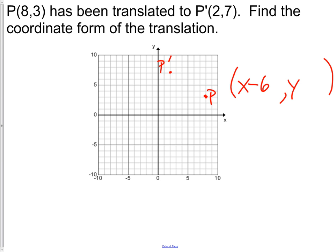Then once I've gone backwards six, I need to go up one, two, three, four. So I'm going to rise four. And you're done - there's the coordinate form of the translation.